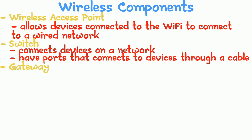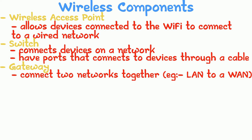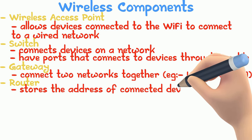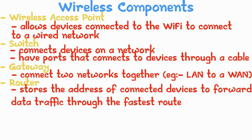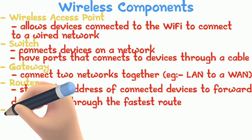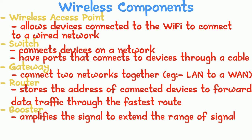A gateway connects two different networks, like a LAN to a WAN. A router stores the address of connected devices to forward data traffic through the fastest route. Most routers have built-in switches, wireless access points, and even act as gateways. A booster amplifies the signal to extend the range — Ethernet cables need boosters every 100 meters, and Wi-Fi also needs a booster past its signal limit.